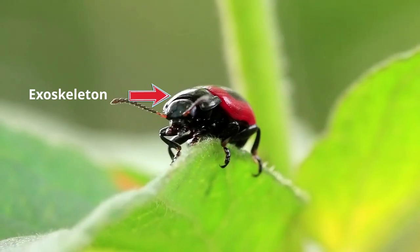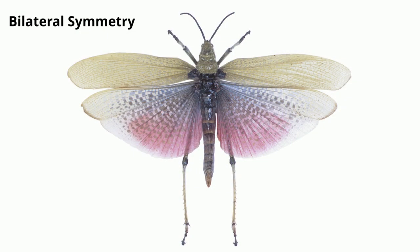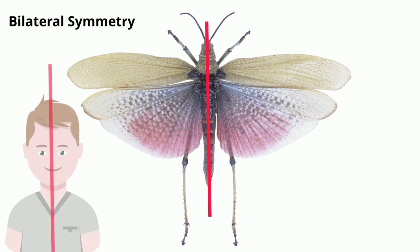Arthropods have bilateral symmetry. This means that if you draw a line down the middle of their bodies, both sides will be identical to one another's. Humans also have bilateral symmetry.